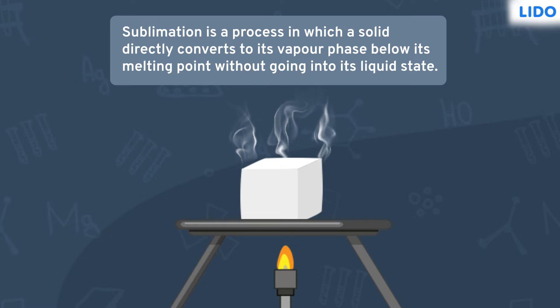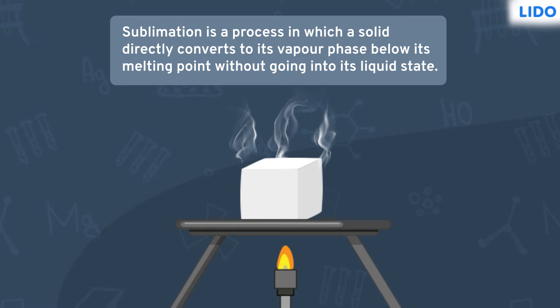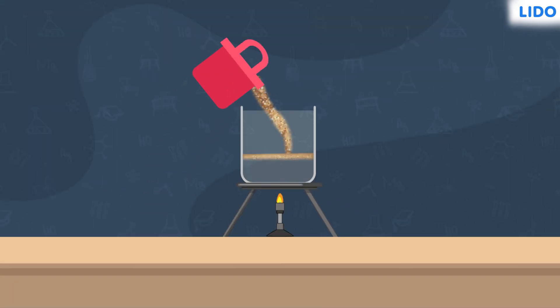Sublimation is a process in which a solid directly converts to its vapour phase below its melting point without going into its liquid state. In contrast, sand and common salt do not sublime.